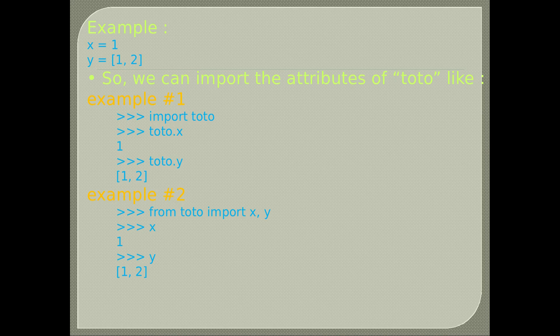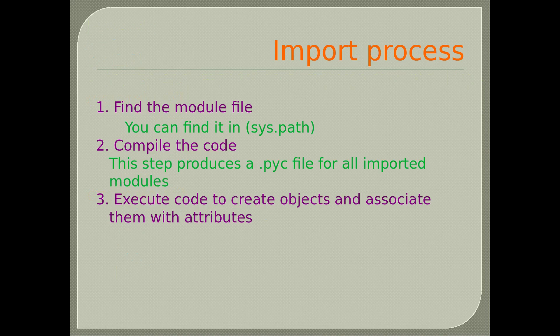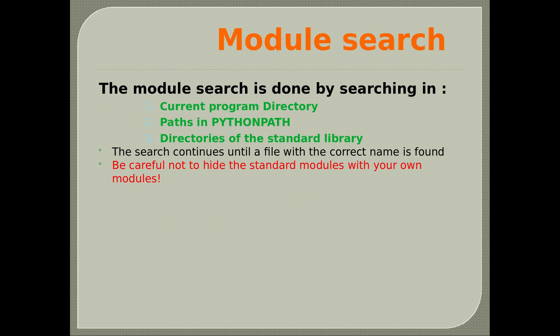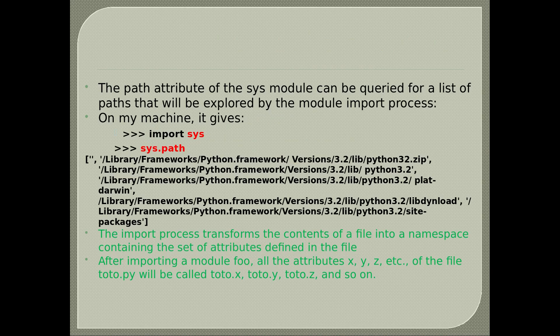Import process: find the module file in sys.path, compile the code (producing a .pyc file for all imported modules), then execute code to create objects and associate them with attributes. The module search looks in the current program directory, paths in PYTHONPATH, and directories of the standard library. Be careful not to hide standard modules with your own modules. The sys.path attribute can be queried for a list of paths explored during import.